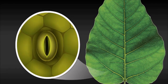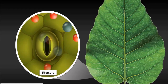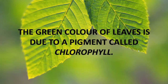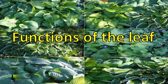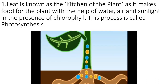A number of tiny openings are present on the surface of a leaf called stomata. They help the plant in exchange of gases and release of excess water. Most leaves are green in color because of a pigment called chlorophyll, which helps the plant in preparing food. The leaf is known as the kitchen of the plant as it makes food with the help of water, air, and sunlight in the presence of chlorophyll.